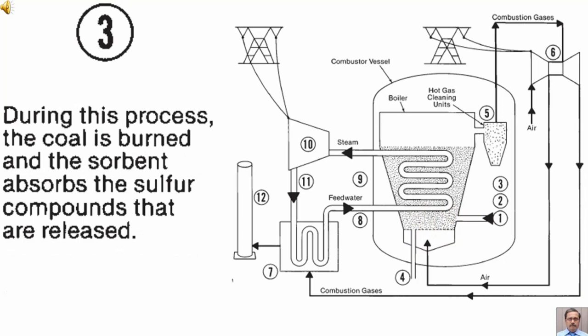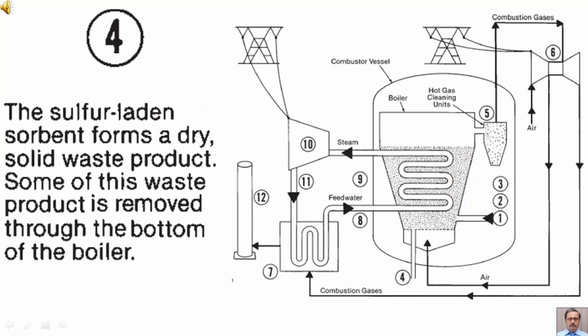During the process, the coal is burned and the sorbent absorbs the sulfur compounds that are released. The sulfur-laden sorbent forms a dry solid waste product. Some of this waste product is removed through the bottom of the boiler.